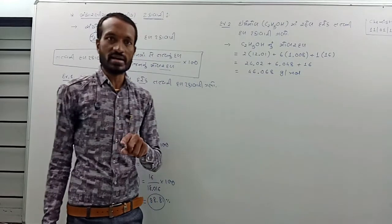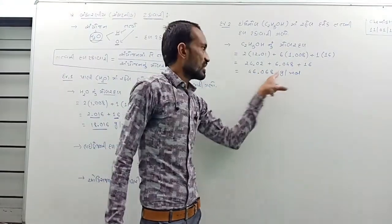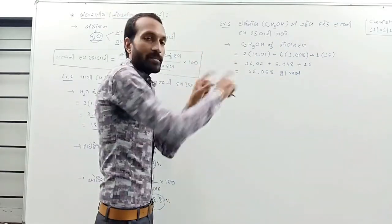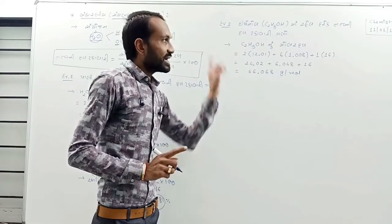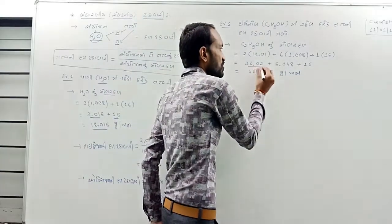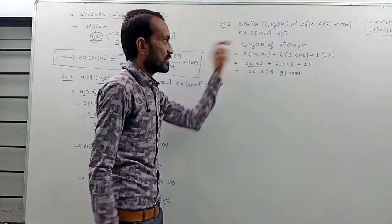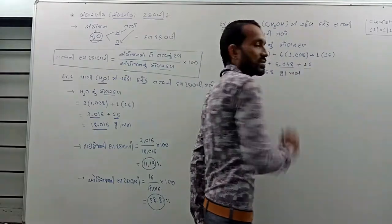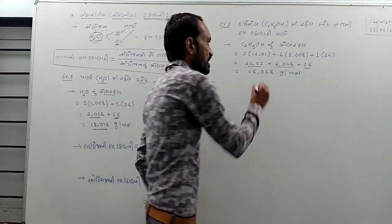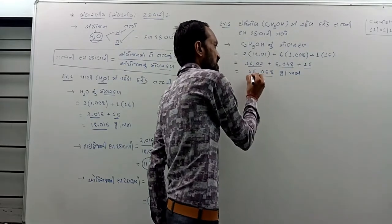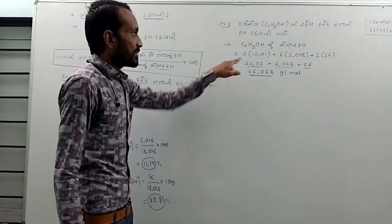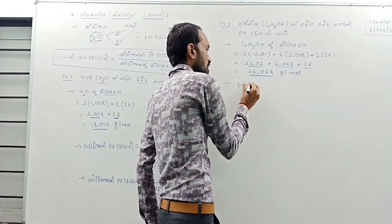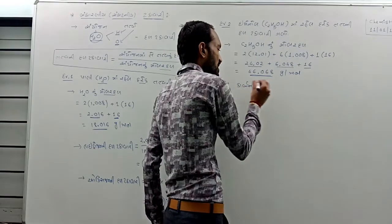yatle 24.02 gram carbon, 46.08 is the molar mass of ethanol. Molar mass means the mass in grams of one mole of substance. We discussed this in the last lecture: which elements and how much. 24.02 grams is carbon, 46.08 is total. Hydrogen and oxygen are also in the source material.